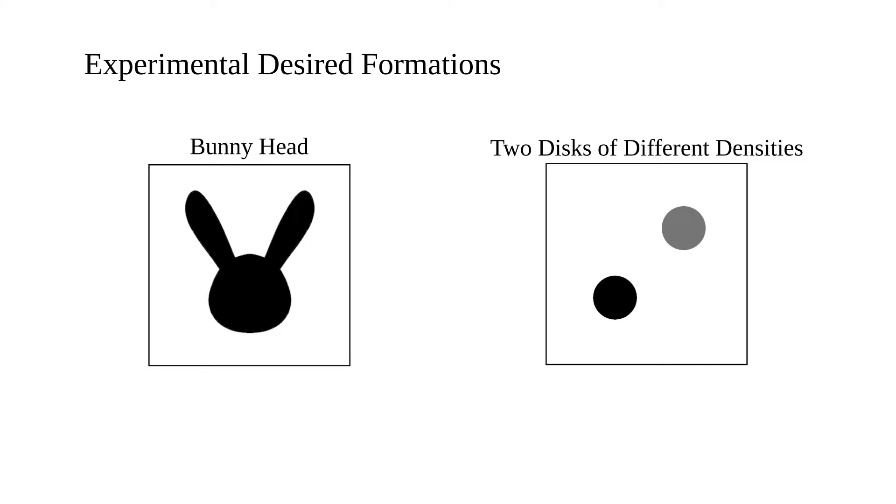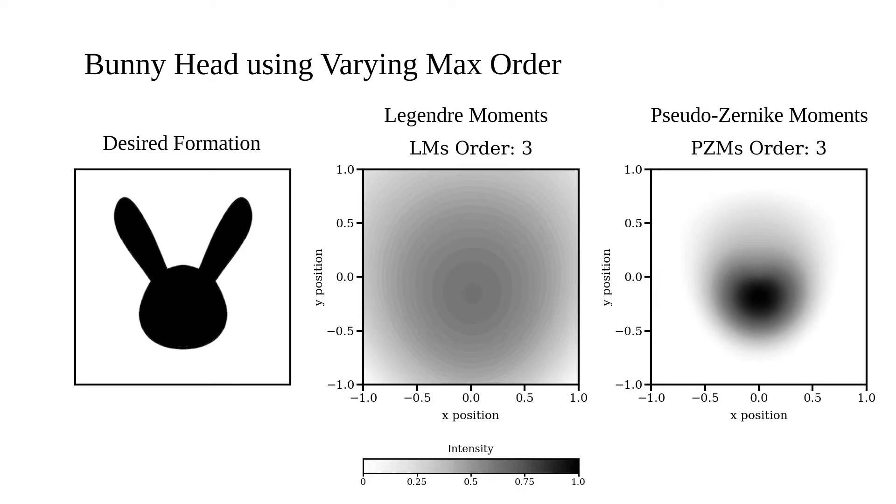We used Legendre moments and Pseudo-Zernike moments to represent a bunny head shape and two disks of different densities, where the leftmost disk is twice as dense as the rightmost. We use first through nth order moments. As the moment order increases, the more image details are represented.